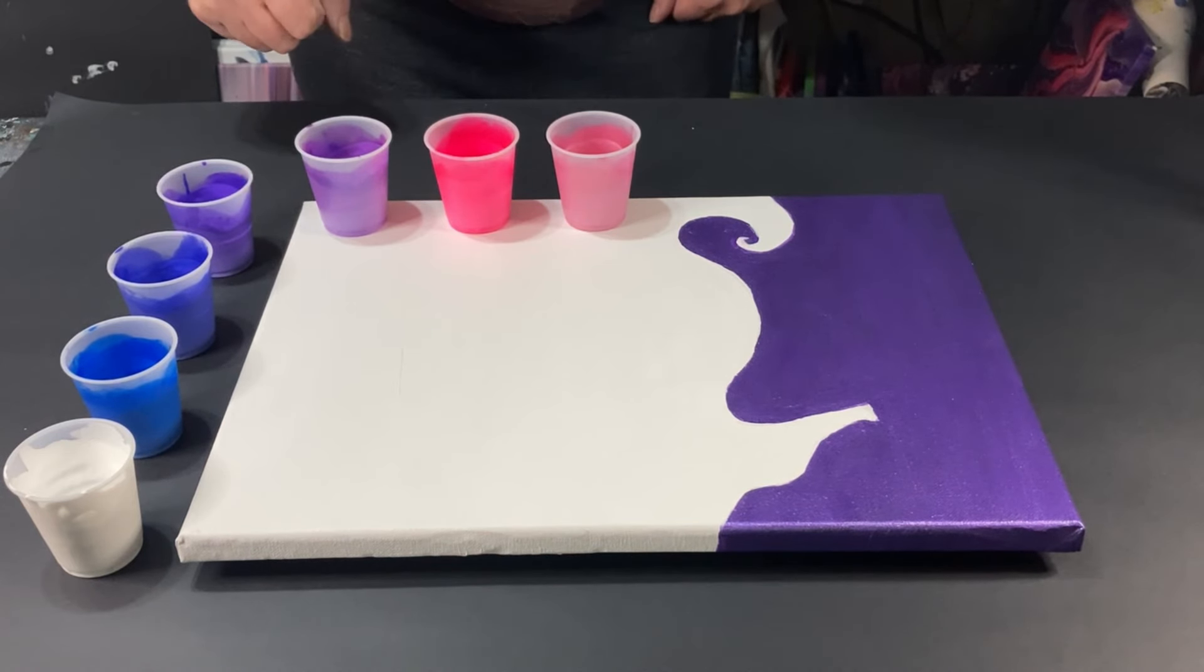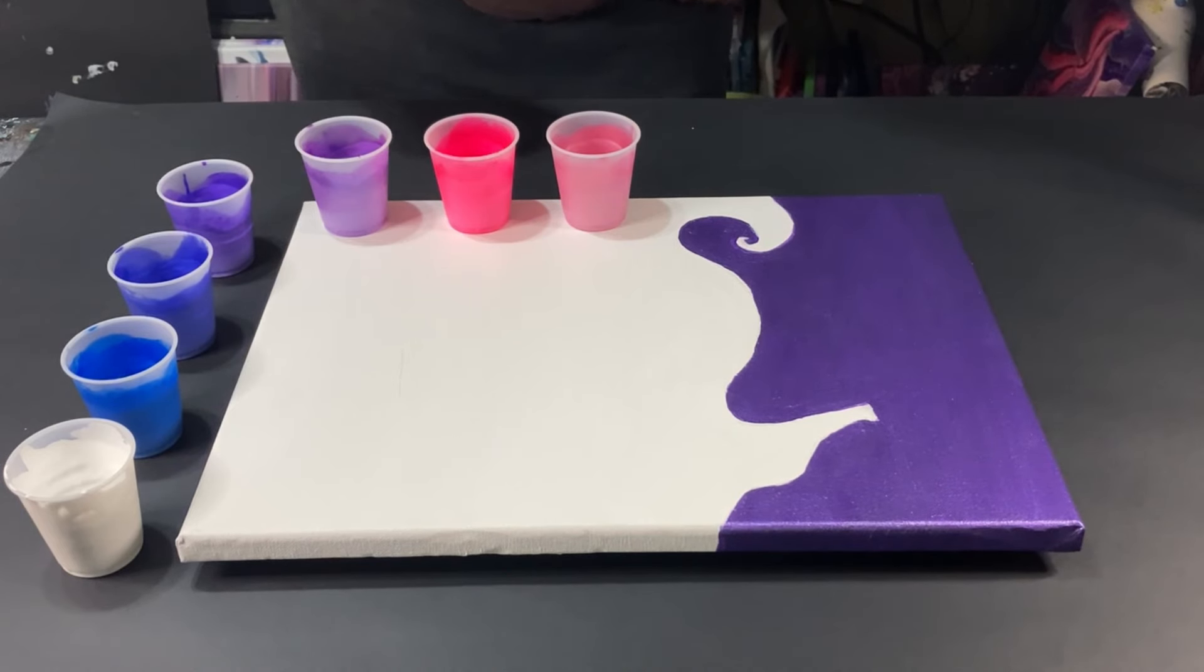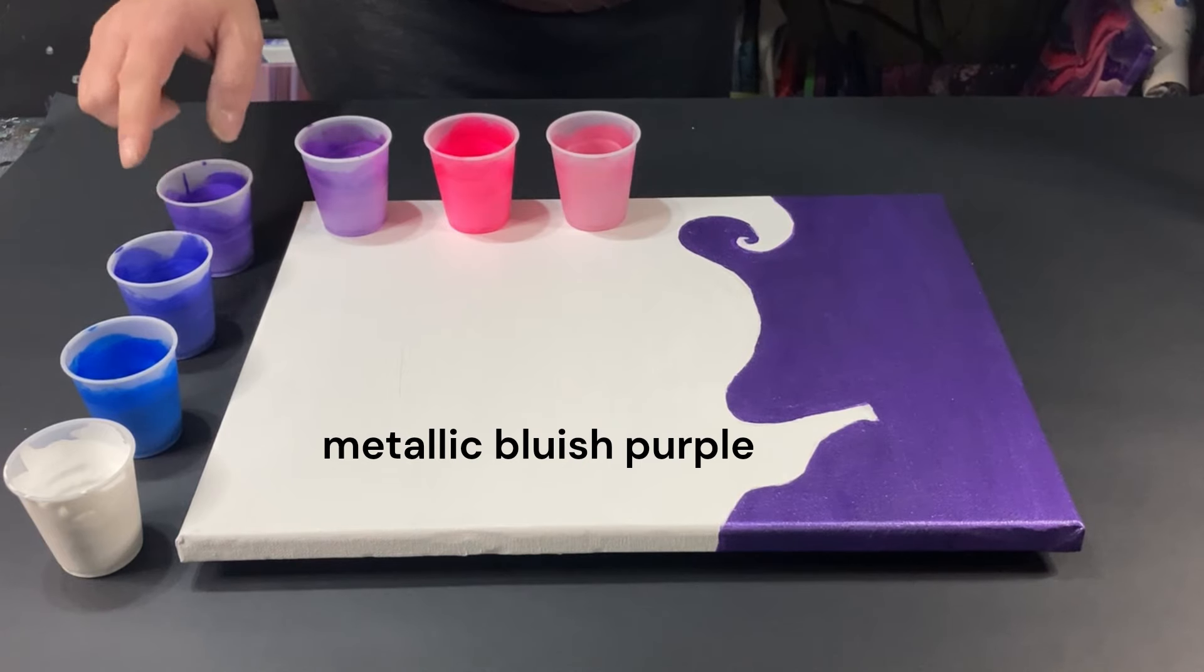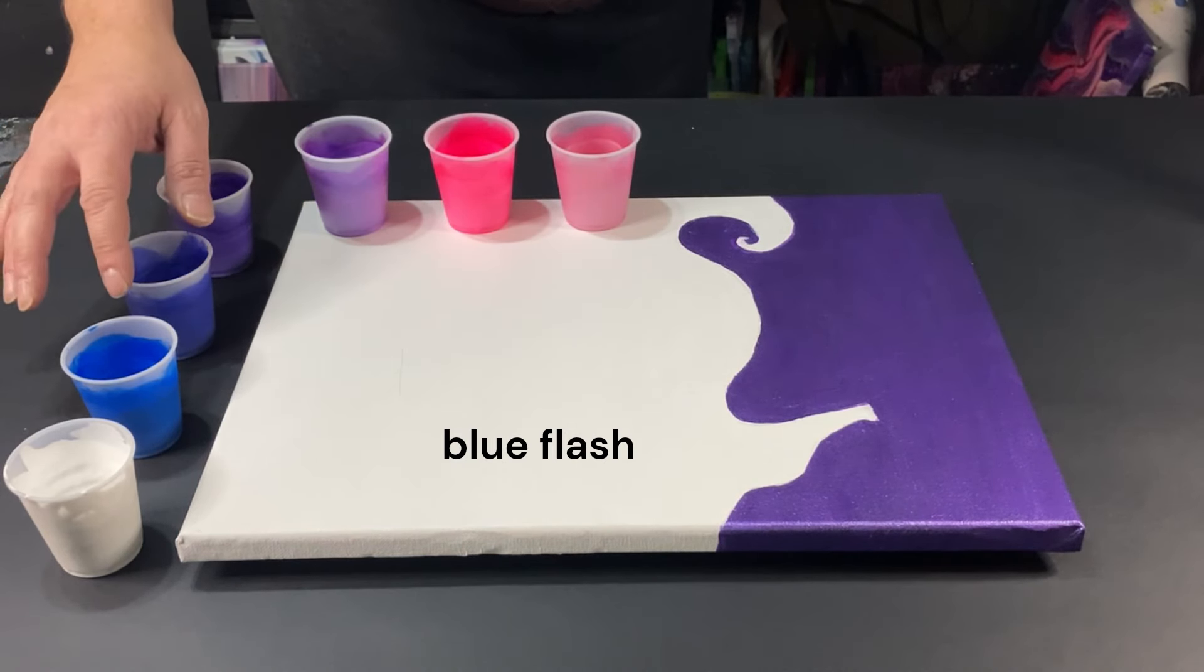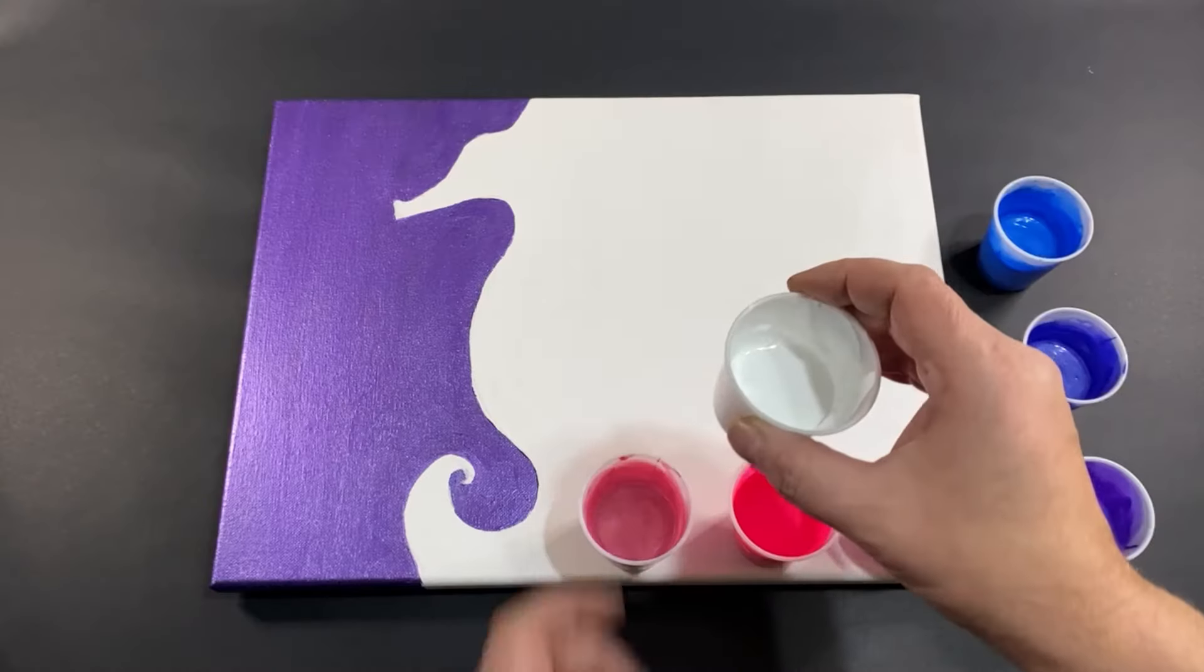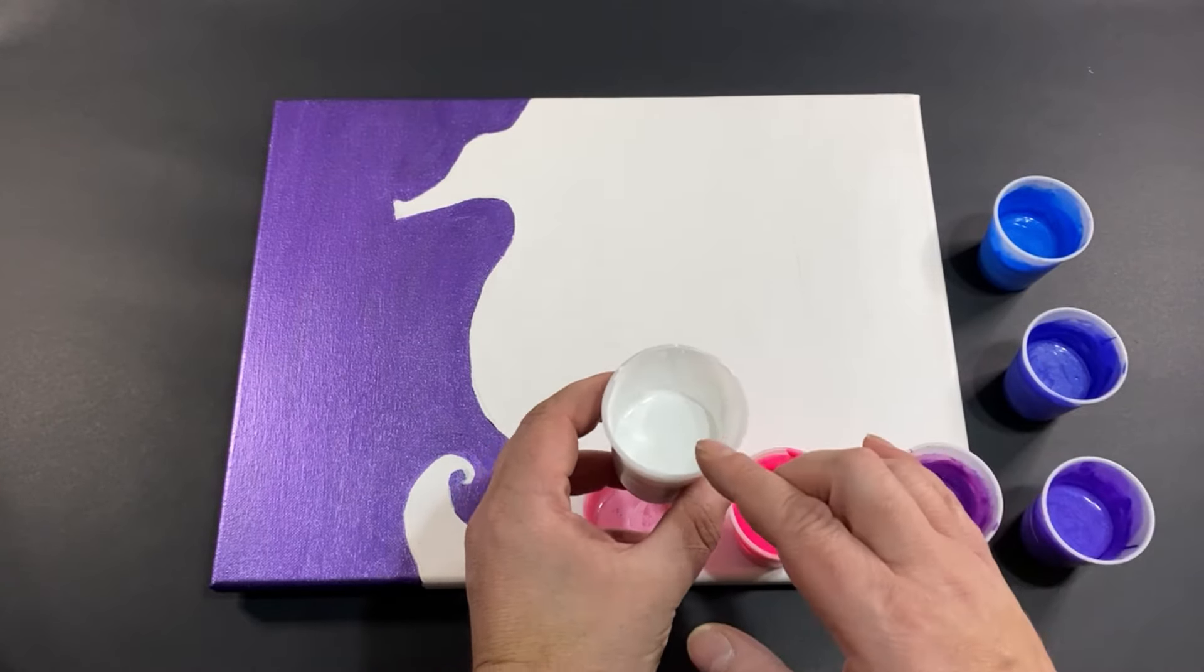This is blue violet flash. This is metallic blueish purple and blue flash. Then we have right here, this is titanium white. It's actually the same consistency as everything else, just a little bit of silicone in it just so we can generate some cells as we swipe.